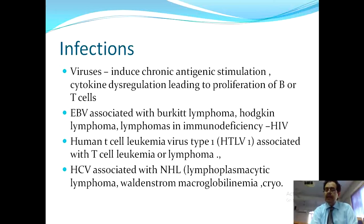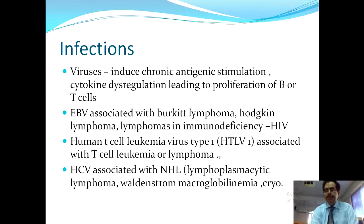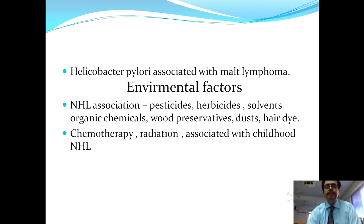In Waldenström macroglobulinemia, the patient may present with unexplained weight loss, lymphadenopathy, splenomegaly, peripheral neuropathy, and IgM paraproteinemia. Helicobacter pylori is associated with MALT lymphomas — mucosa-associated lymphomas of the stomach.